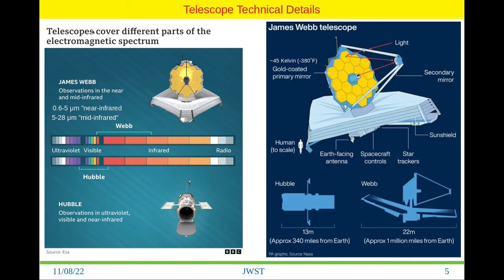Now the telescope technical details. The telescope covers different parts of the electromagnetic spectrum. Previously there was Hubble, which worked in the ultraviolet region, then the visible region, and then the near-infrared region — basically the closest to the infrared. The James Webb Telescope works in the near and mid-infrared regions. When I say near infrared, it covers the wavelength 0.625 micrometer, and 5 to 28 micrometer in the mid-infrared region.